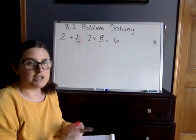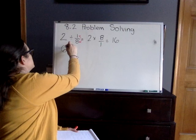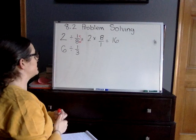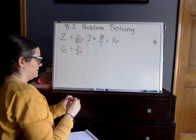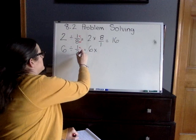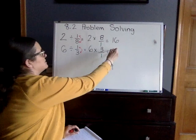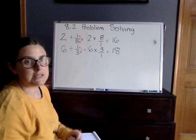So 6 divided by 1/3, and we're going to follow the same step where we flip our fraction and then multiply. So it's really 6 times—we flip, the three goes on top—we multiply straight across. 6 times 3 is 18, so we have 18 pieces of the bread.